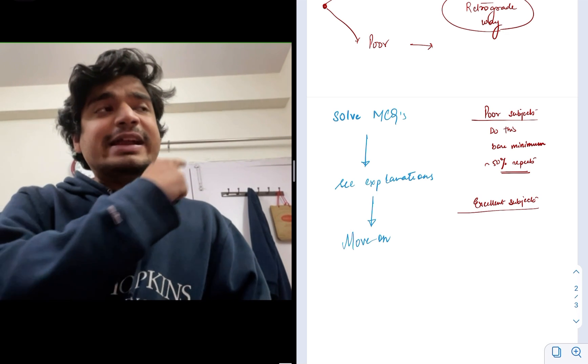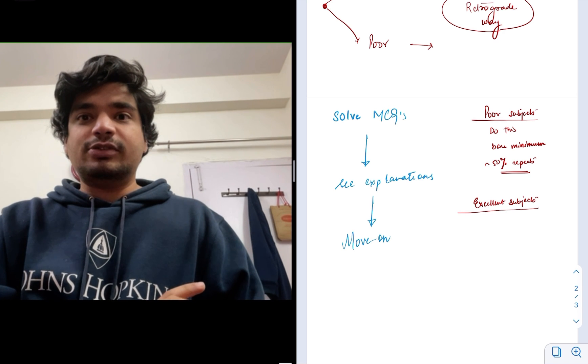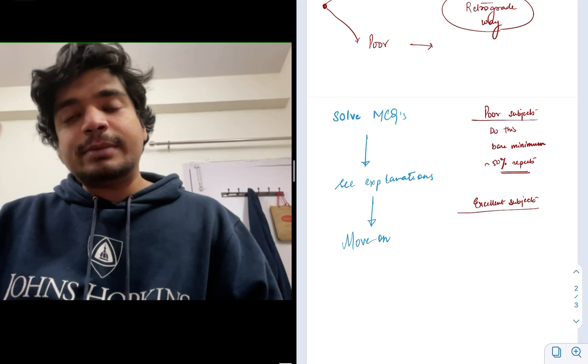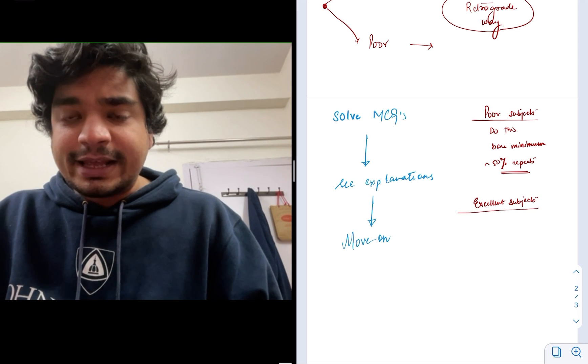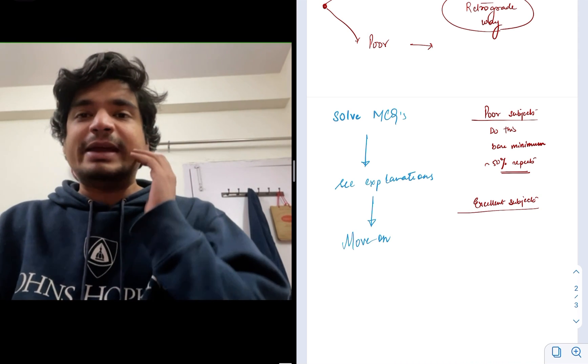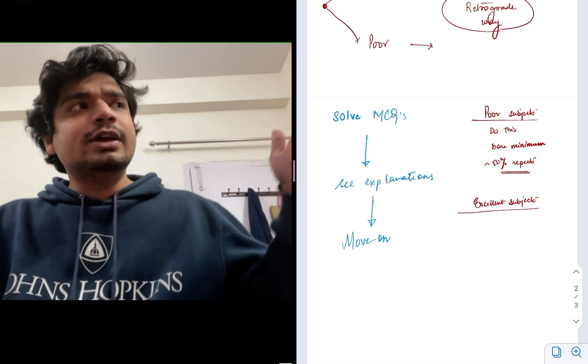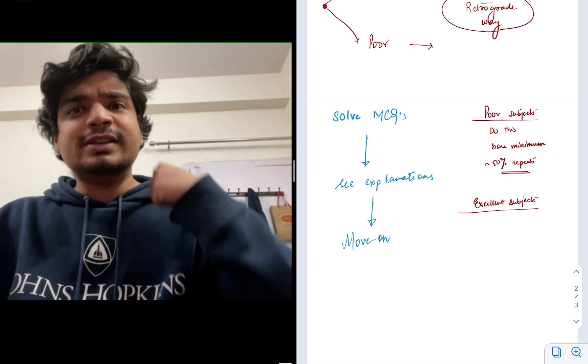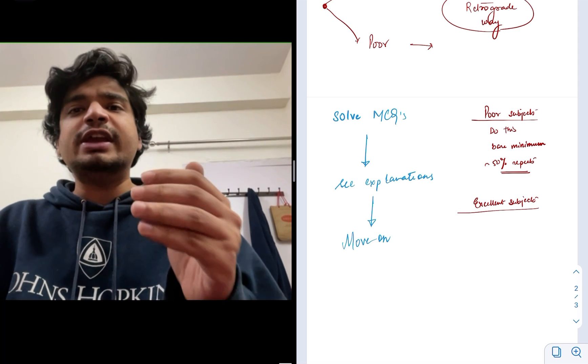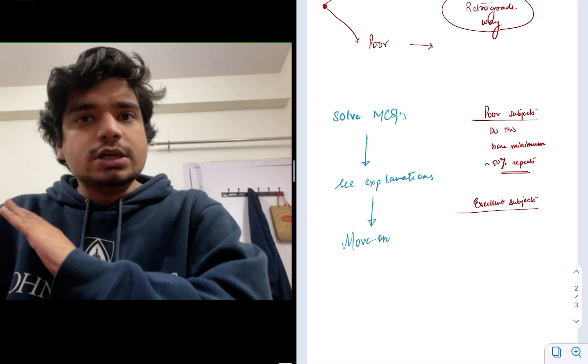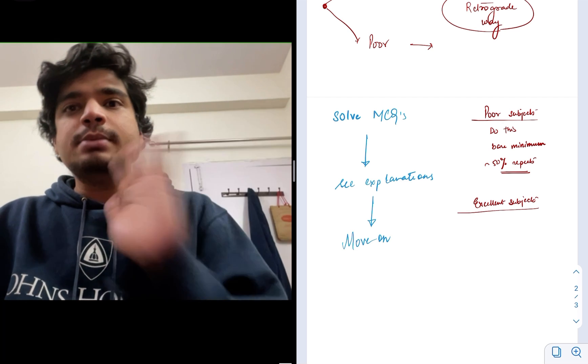I know that biochemistry is already done. I don't need to revise the entire notes of biochemistry. In this way, excellent subjects can be done just by solving MCQs. Similarly, let me take an example of a UG topic. If someone says I am excellent in modern physics, you just need to solve the MCQs of modern physics and move on. In biology, if you're excellent in ecology, just solve the MCQs, see the explanation and move on.